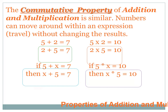Let's look at some samples. 5 plus 2 equals 7 — that's true. We also know it's true that 2 plus 5 equals 7. We switched the 2 and the 5, and the answer's the same. That's because of the commutative property. Also, 5 times 2 equals 10, and 2 times 5 equals 10. We can move the 2 and the 5 around without changing the results.